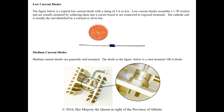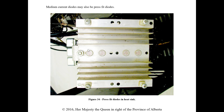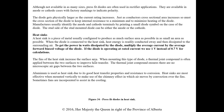Medium current diodes are usually stud-mounted. The one in the figure is a stud-mounted 100-amp diode. We do have these in our battery chargers. There's a heat sink it's mounted onto to help dissipate heat. They can also be press-fit diodes, pressed right onto a heat sink to dissipate heat from the diode, since current going through them creates a lot of heat. The diode gets physically larger as the current rating increases — just as a conductor's cross-sectional area increases, so must the diode's, to keep internal resistance to a minimum. Manufacturers usually identify anode and cathode terminals by printing a small diode symbol on the case. The stud side of a stud-mounted diode can be either anode or cathode, so watch that when installing.